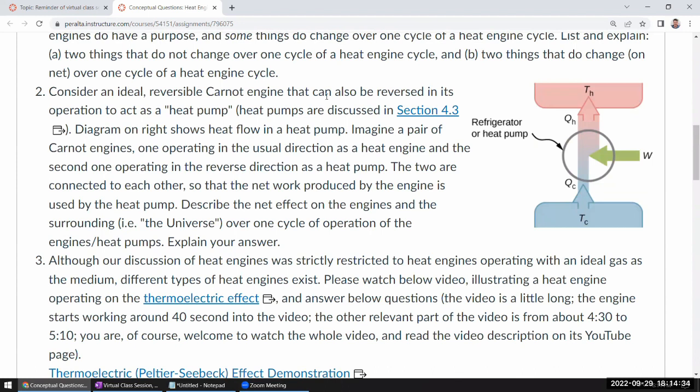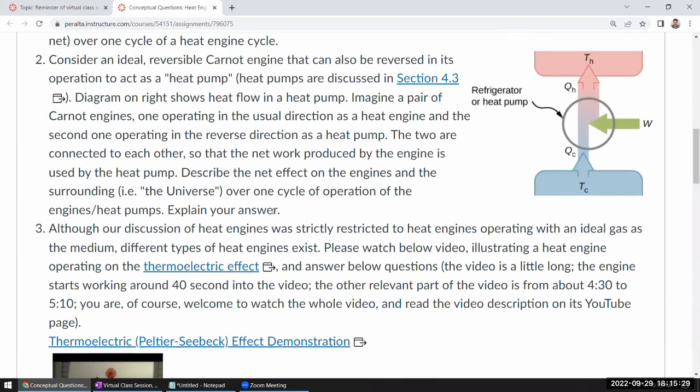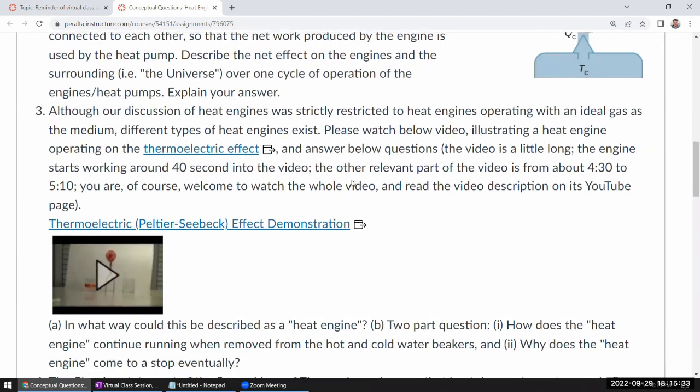Question number two. Consider an ideal reversible Carnot engine that can also be used as a heat pump. A pair of Carnot engines are connected to each other. Describe the net effect on the engines and the surroundings over one cycle. Well, it's a kind of zero net effect. Basically, the work done by the reversible Carnot heat engine can be the work that's allowing the Carnot heat pump to run. And the reversible Carnot heat pump that's running basically puts the heat back into the high temperature reservoir and takes out the exact amount of heat that was put into the low temperature reservoir. So the net effect is zero. It's not a trick question or anything like that, as long as it's reversible.